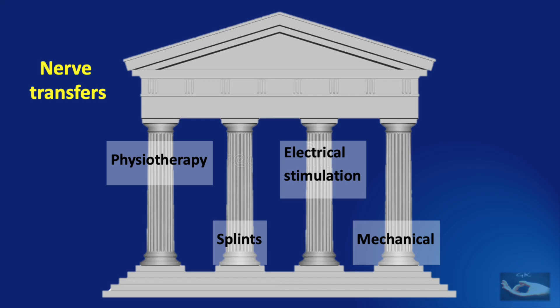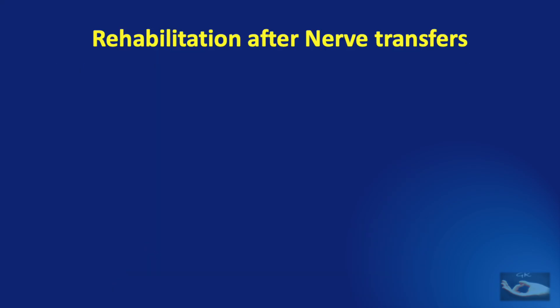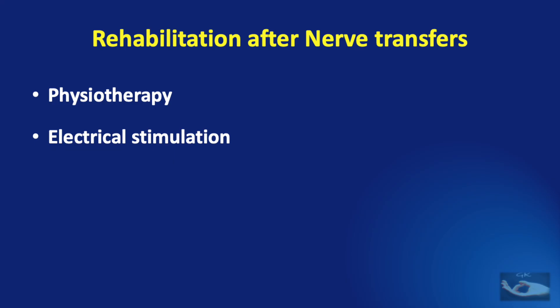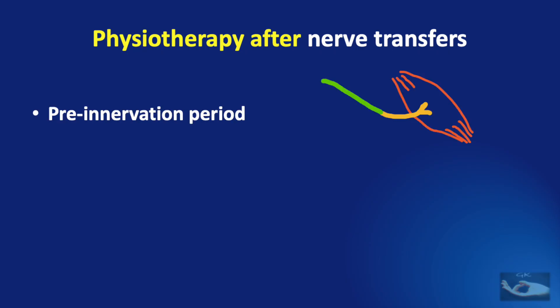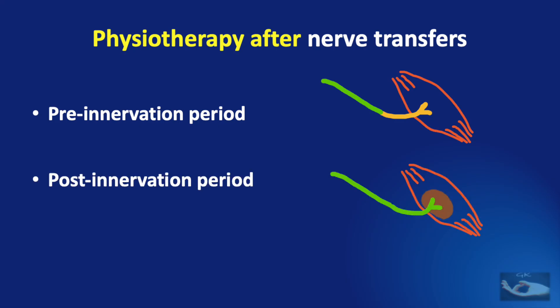These main parameters are important whether it is nerve transfers or tendon transfers. Let us first consider rehabilitation after nerve transfers. The three modalities involved are physiotherapy, electrical stimulation and splints. The role of physiotherapy after nerve transfers occurs in two situations: the pre-innervation phase, where the nerve coaptation has been done but the nerve has still not grown into the muscle, and the post-innervation period where the nerve has grown into the muscle.